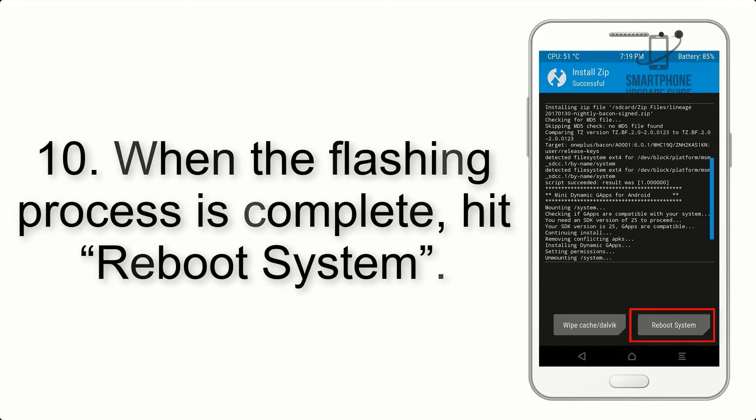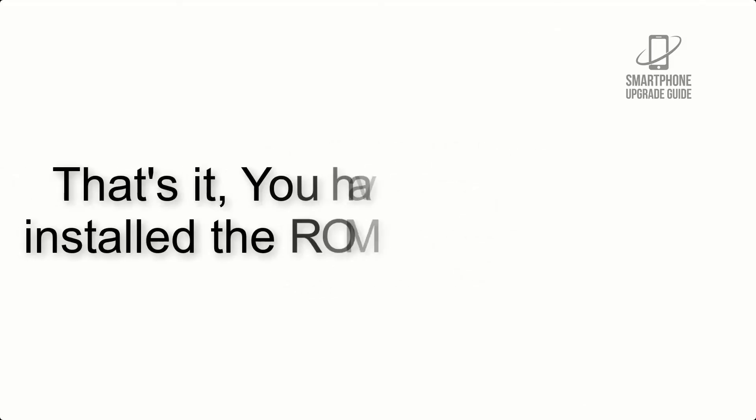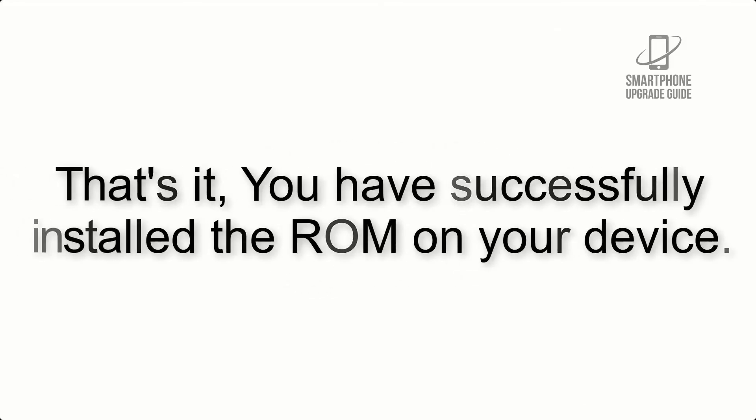Step 9: After GApps flashing completes, select Wipe Cache and Dalvik from the bottom left side of the screen and swipe to wipe. Step 10: When the flashing process is complete, hit Reboot System. That's it — you have successfully installed the ROM on your device.